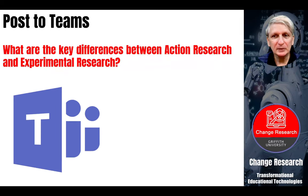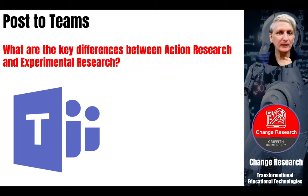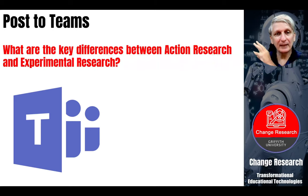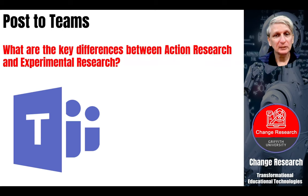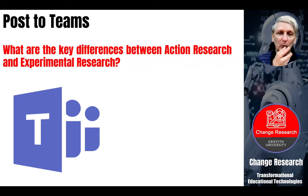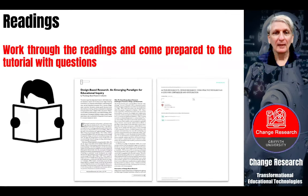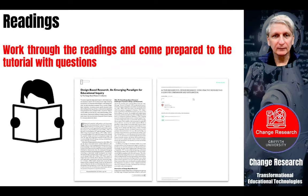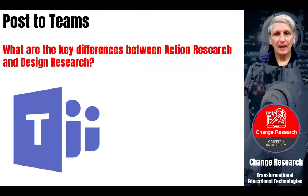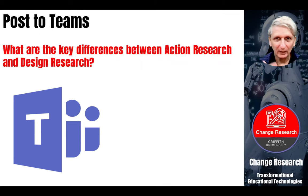I'd like you to post to Teams what you feel is the difference between action research and more traditional experimental research. Experimental research generally involves a pre-post test: you take a measurement before doing something, do something, then take a measurement afterwards to see what effect it had. See if you can think through what differences there might be. There are also three readings for this week — you'll find links on the course website. Having read those, post to Teams what you see as the difference between action research and design research, which we're going to explore now.